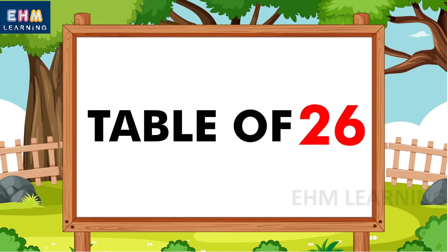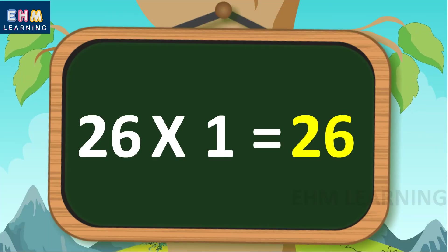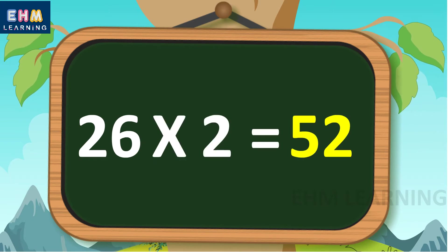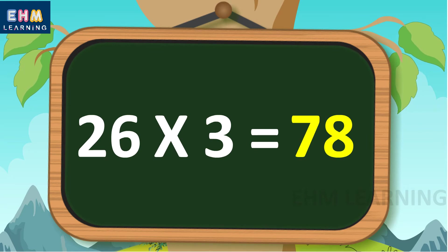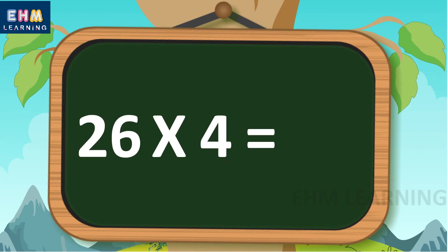Hello children, today we will learn the table of 26. 26 ones are 26, 26 twos are 52, 26 threes are 78.